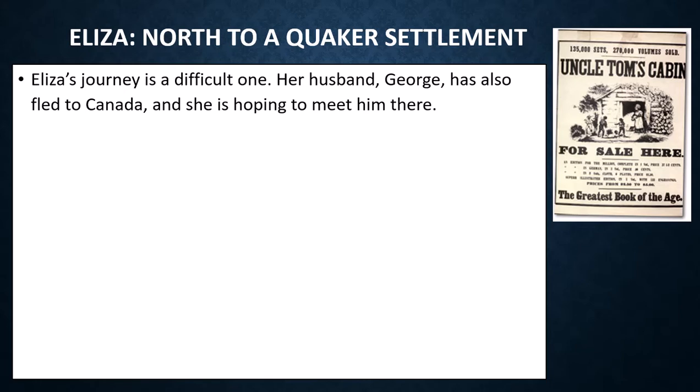Sometimes enslaved people would be married off to have children on purpose so that their master would have more capital — more people to sell — and then have those children taken from them, breaking up these family units.